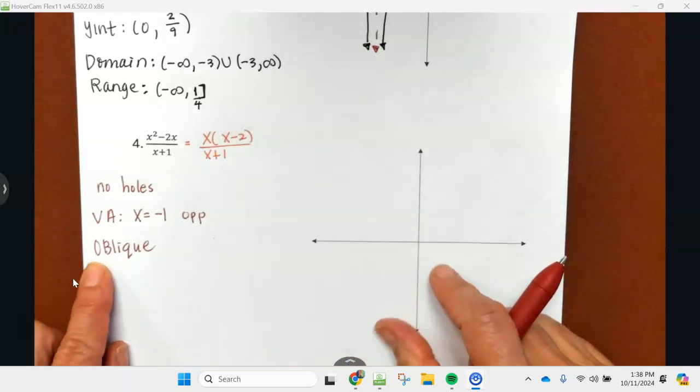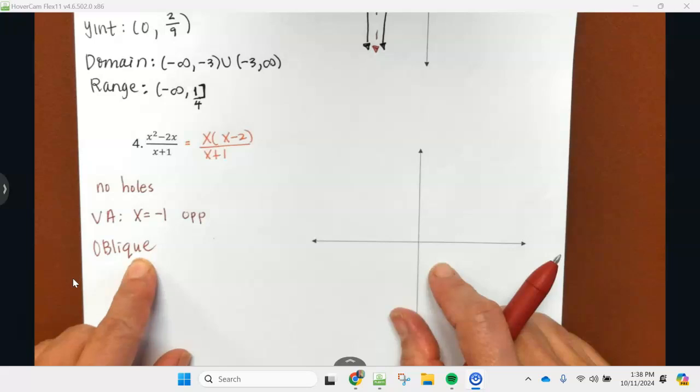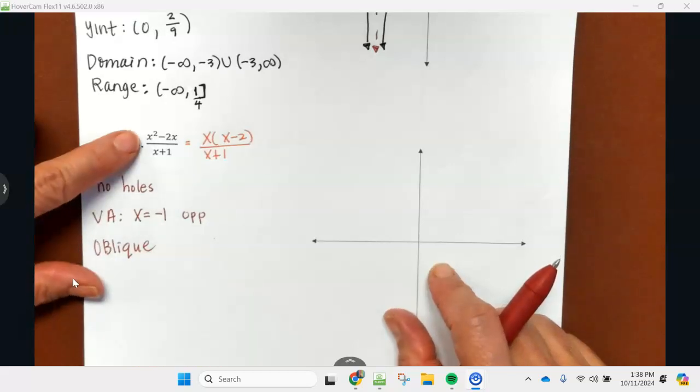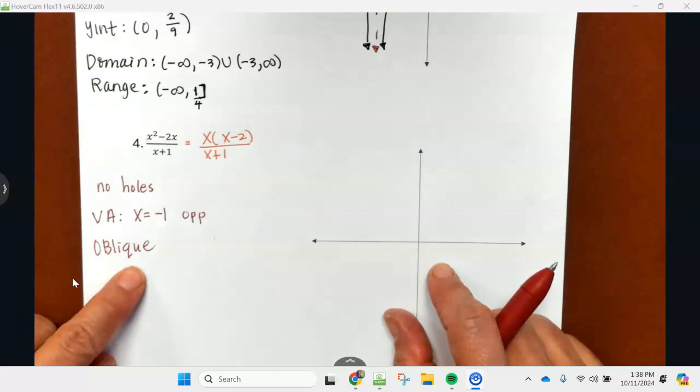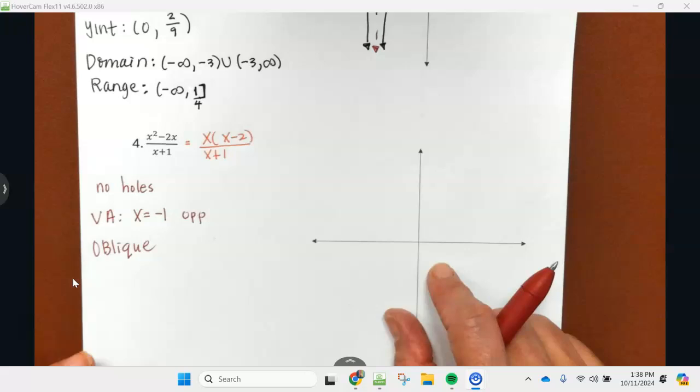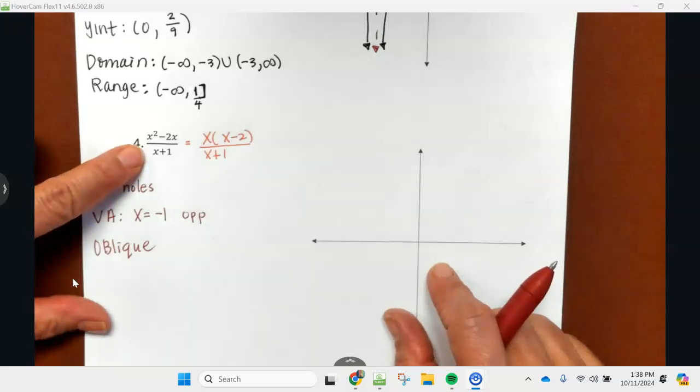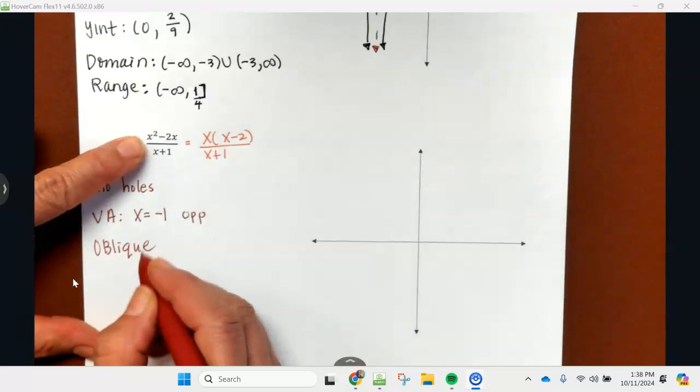I'm going to chime in right here because we have not had an oblique asymptote. I know that the degree of the winner is the numerator, so when the numerator wins you're going to have a y equals mx plus b kind of line. We're going to do synthetic division.